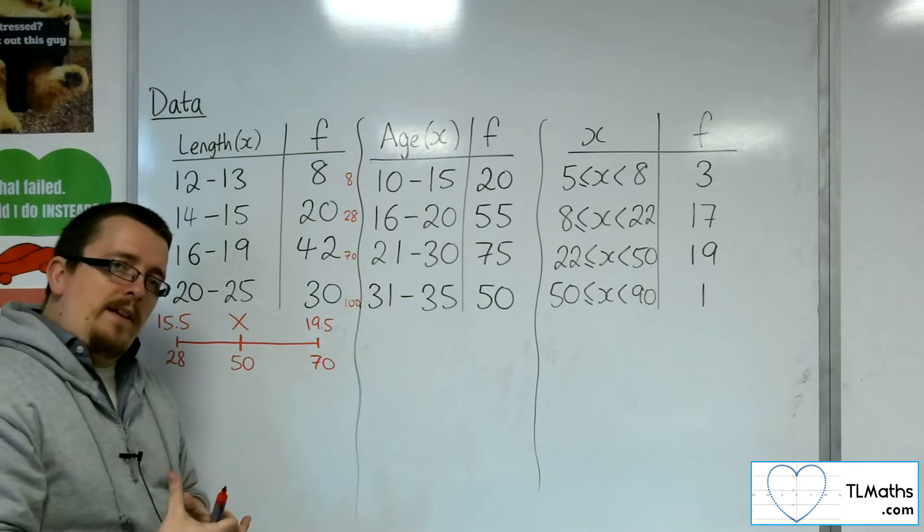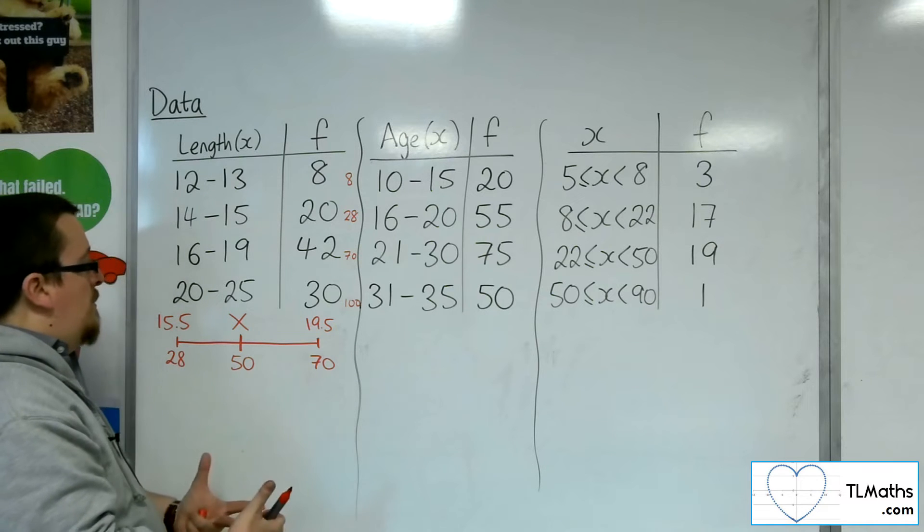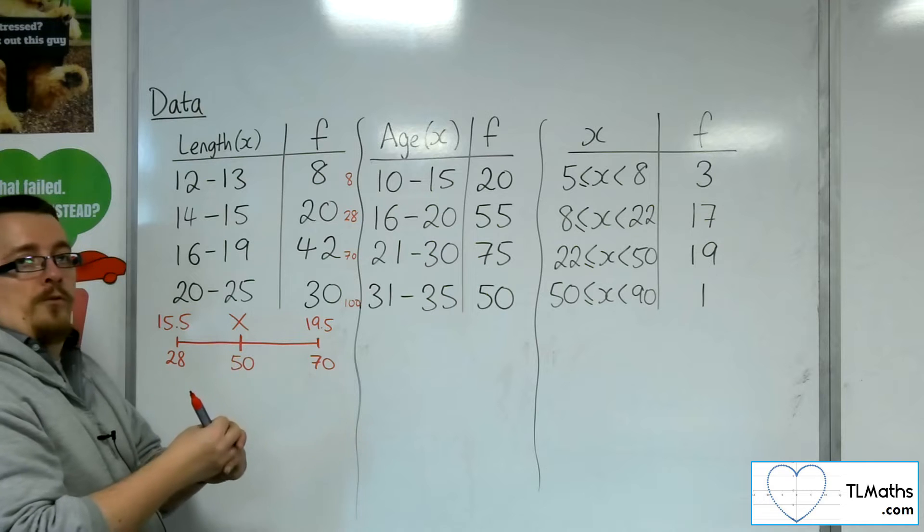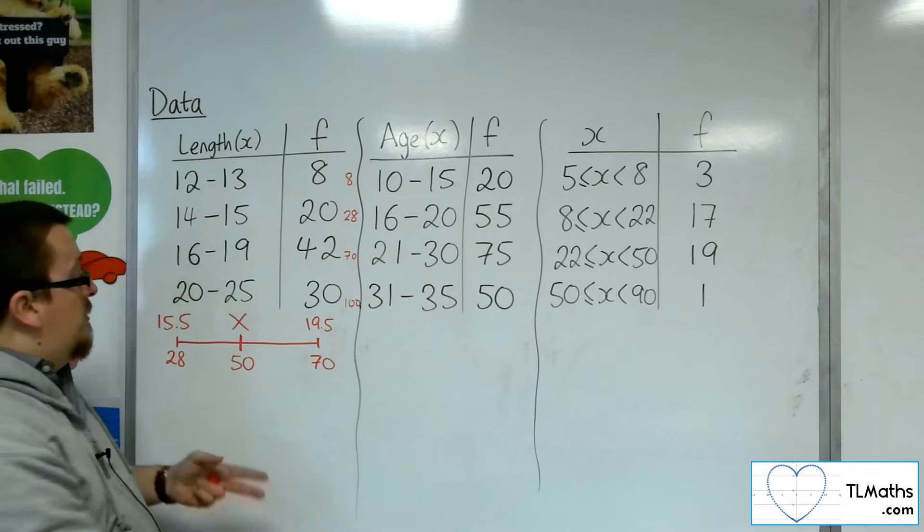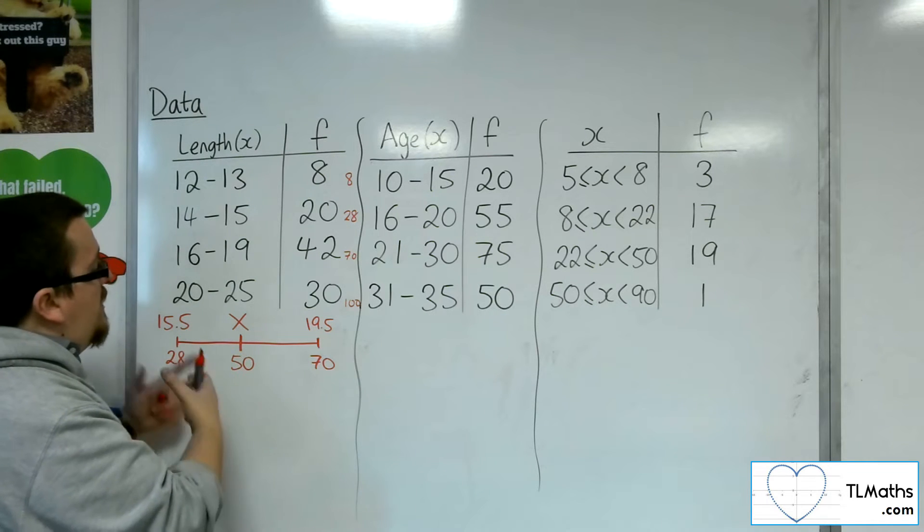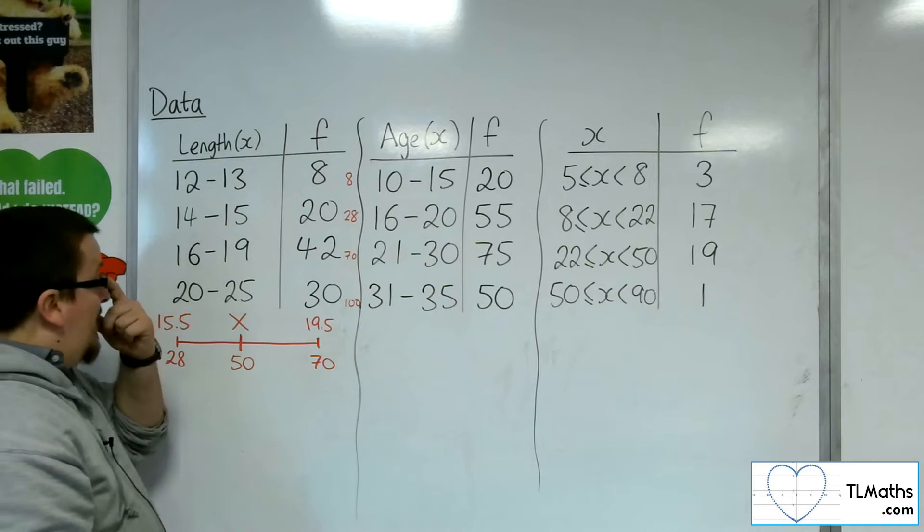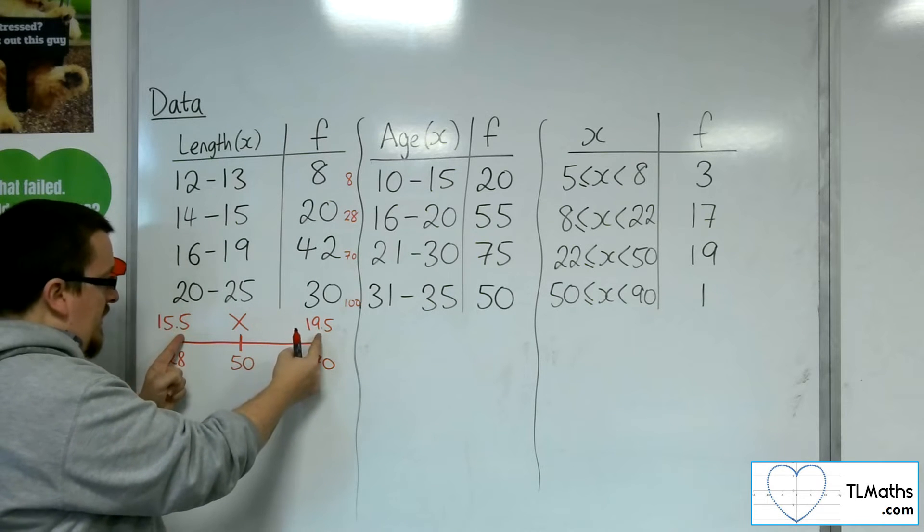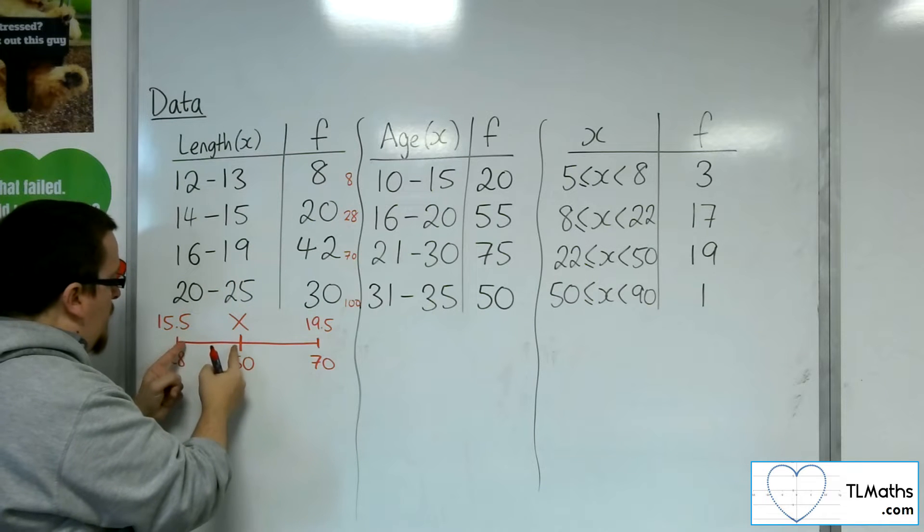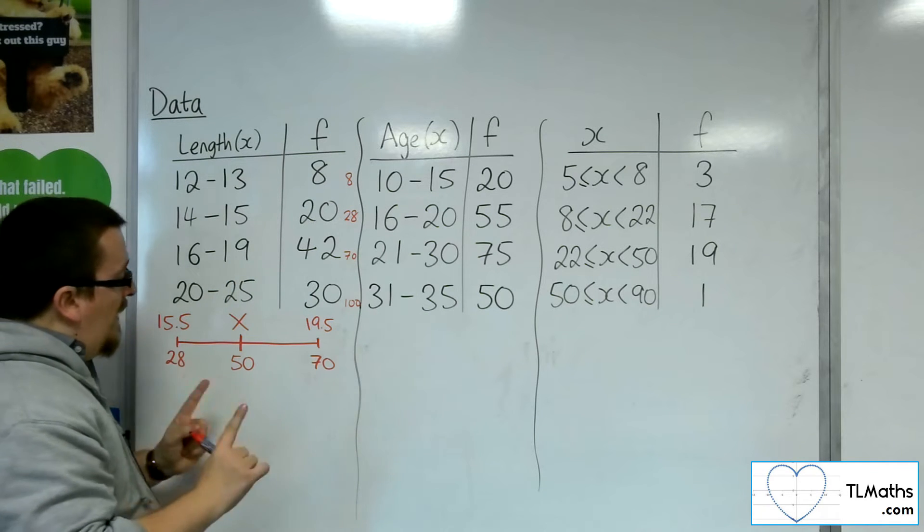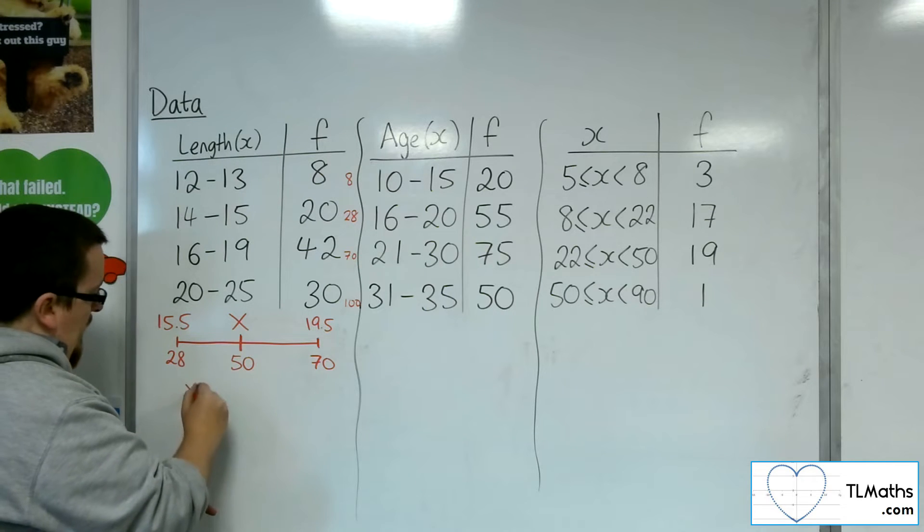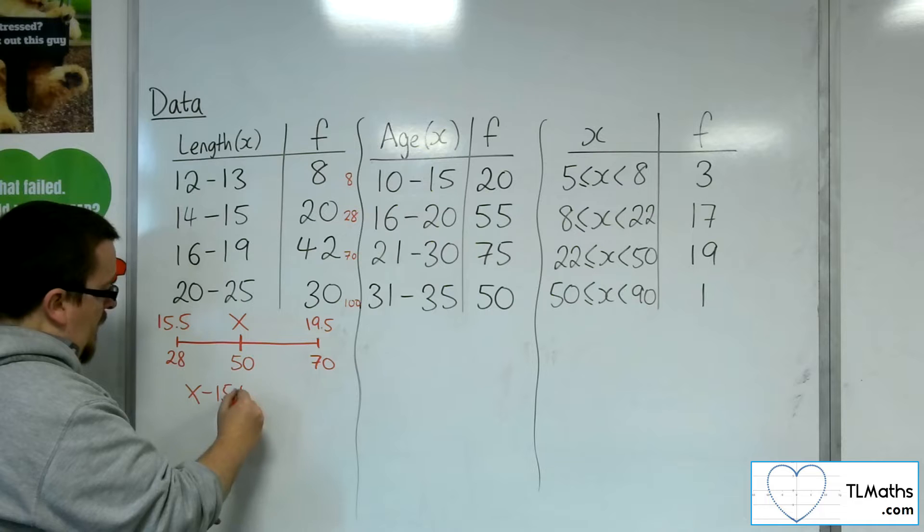Now, to calculate this estimate of the median, I need to use what's referred to as linear interpolation. This is it. This number line really helps, because the idea is that the ratio of that distance to that distance is the same as the ratio of that distance to that distance. Now, what that means algebraically is the difference in that, so x take away 15.5,